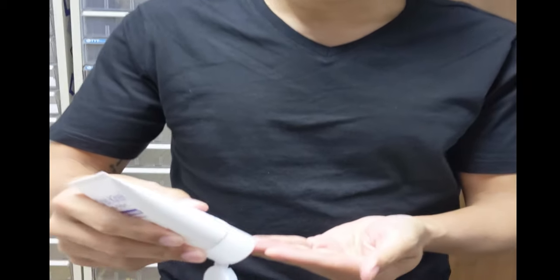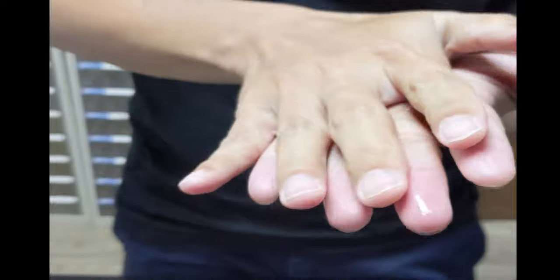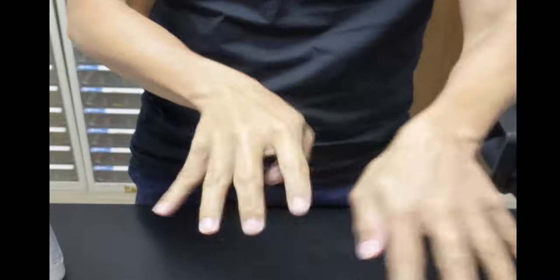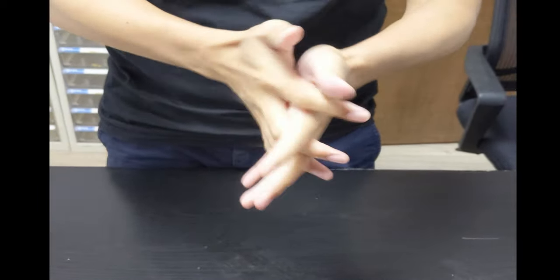What you have to do is squeeze a bit of the hand sanitizer on your hands. The first thing you have to do is rub your palms together. After that, you go to the back of the hand and interlace your fingers. Next is the finger webs.